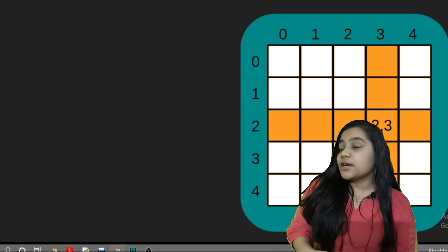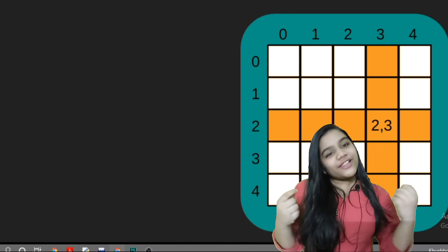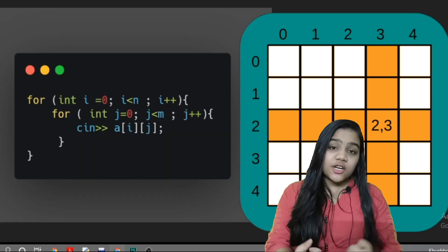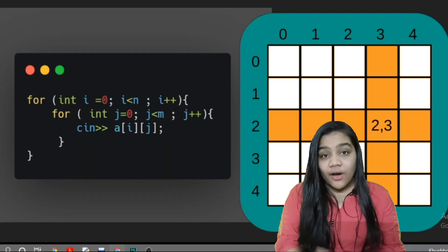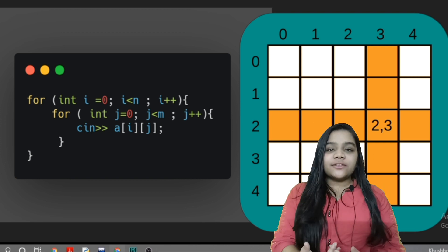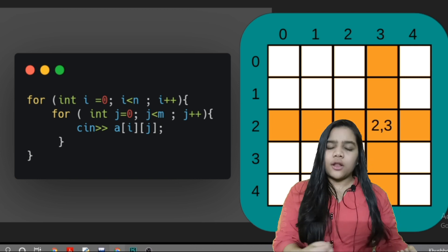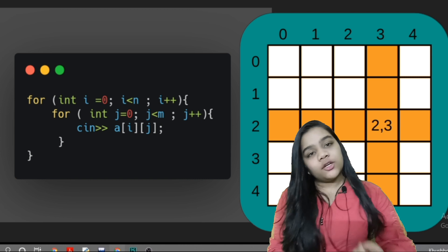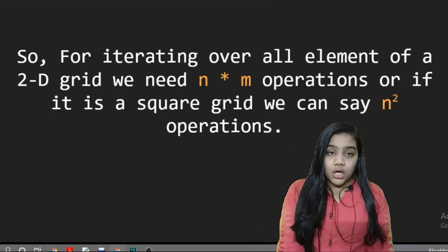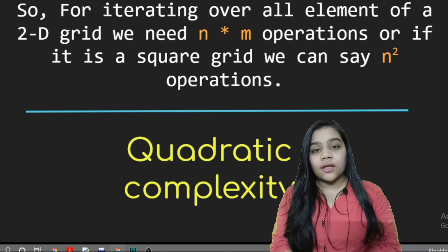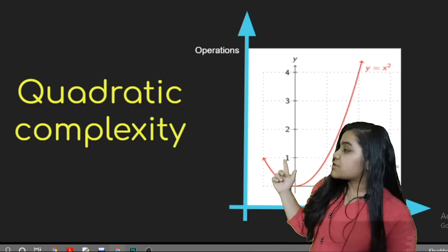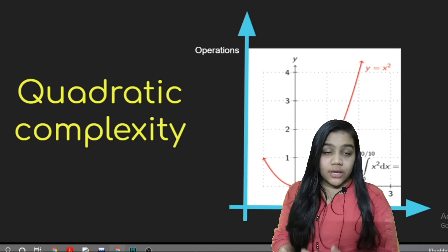Let's say this grid. So if we have to input all the elements of this grid then we have to use a nested loop. So for this nested loop, if the size of our grid is n into m, the total operations that will run are also n into m. So we can say that it has a quadratic complexity that is n square and its graph looks something like this. It keeps on increasing.